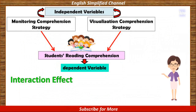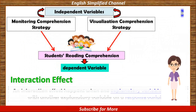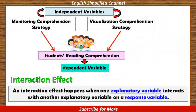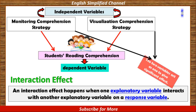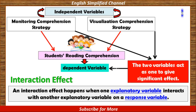And last but not least is interaction effect. An interaction effect happens when one explanatory variable interacts with another explanatory variable on a response variable. In other words, visualization comprehension strategy and monitoring comprehension strategy interact as one to give a significant effect on students' reading comprehension.